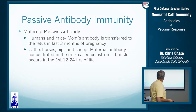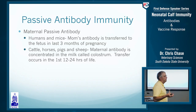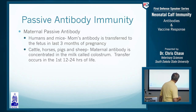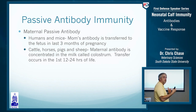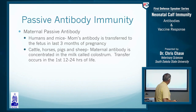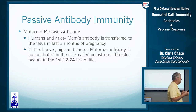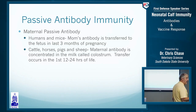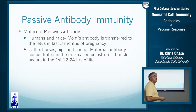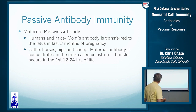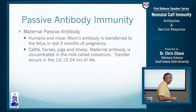The interesting thing about passive antibody is that in people and mice, a large share of antibodies actually crosses the placenta. The difference is that people have just four layers between the uterus and the baby, while cattle and domestic animals have six layers. That's why calves are born agammaglobulinemic - they have no antibody at all - making colostrum essential to provide protection.